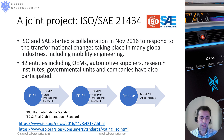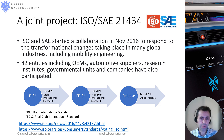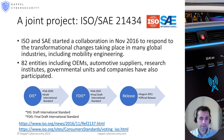It is also important to note that 82 entities from different domains, including OEMs and suppliers, participated in the development. As a result, the DIS version, which is the first version for the public, was released in February 2020, and one year after, the FDIS version was released. The official release was in August of the same year, 2021. All of these phases are well explained and transparent to everyone on the ISO waiting page for those interested. You can see the link at the bottom of the page.